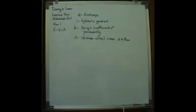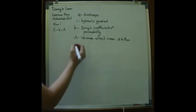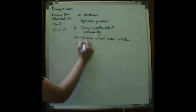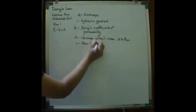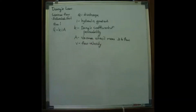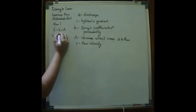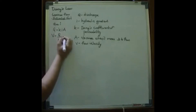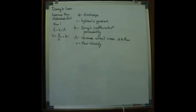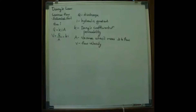Where I is the hydraulic gradient and A is the area of soil mass perpendicular to flow. The flow velocity V is equal to Q divided by A, which equals K into I. So, V equals K·I or Q equals K·I·A. This is Darcy's Law.